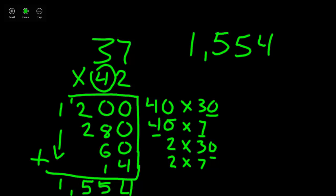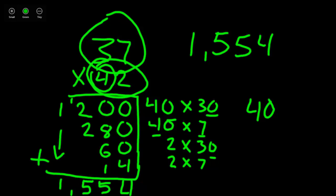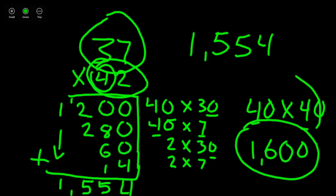If I wanted to estimate to see if my answer was close or even correct, I could round my 37 to a 40. And I could round my 42 to a 40. We know 4 times 4 is our simple problem. That is 16. Add my 2 0's in, and I have 1,600 as my estimate, which is very close to my actual answer of 1,554.